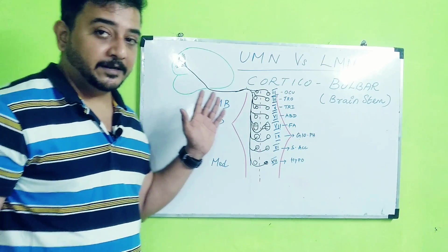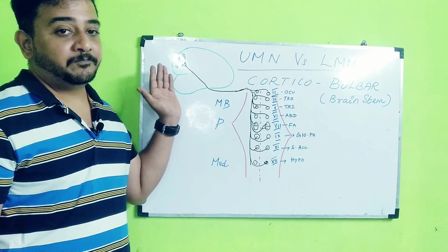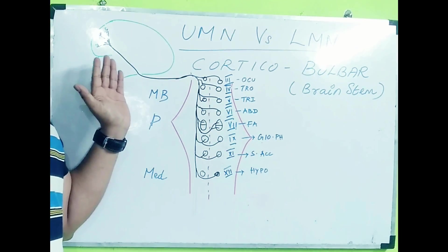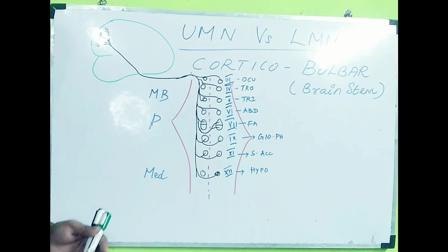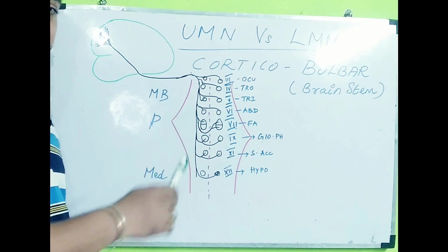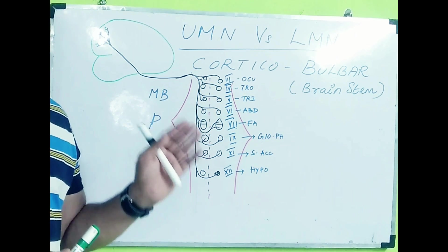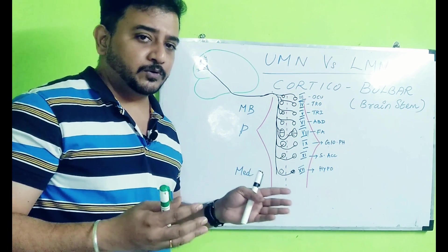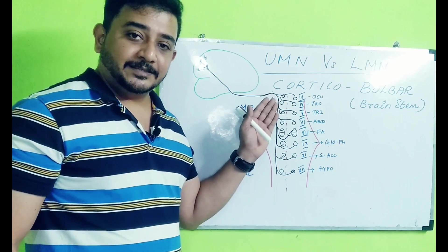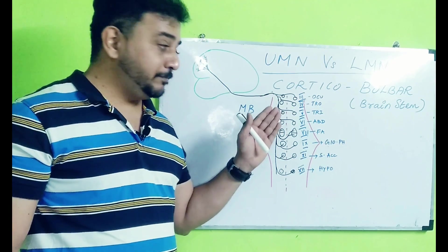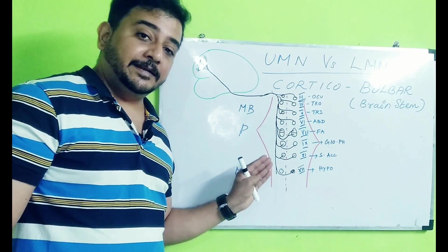The corticobulbar tract, as we saw in the pyramidal tract, arises from the motor cortex of the brain, particularly the cerebral cortex in the frontal lobe. Thereafter it comes down and passes through the corona radiata and then enters into the genu of the internal capsule. Few fibers are also there in the posterior limb of the internal capsule, but predominantly it is in the genu, and then it enters into the crus cerebri of the midbrain and innervates all the nuclei of the cranial nerves.